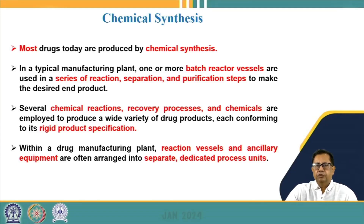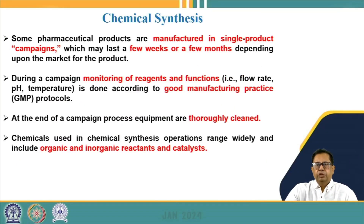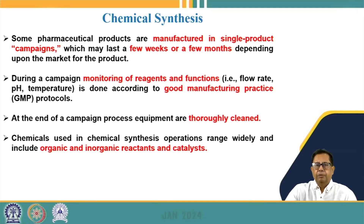Within a manufacturing plant, a number of reaction vessels and ancillary equipment are arranged in separate dedicated units to manufacture specific pharmaceuticals. Some pharmaceutical products are manufactured in a single product campaign — for example, when certain drugs are required only for a few weeks or months seasonally. During the campaign, reagents and process parameters such as flow rate, pH, and temperatures are constantly monitored to confirm good manufacturing practice protocols.